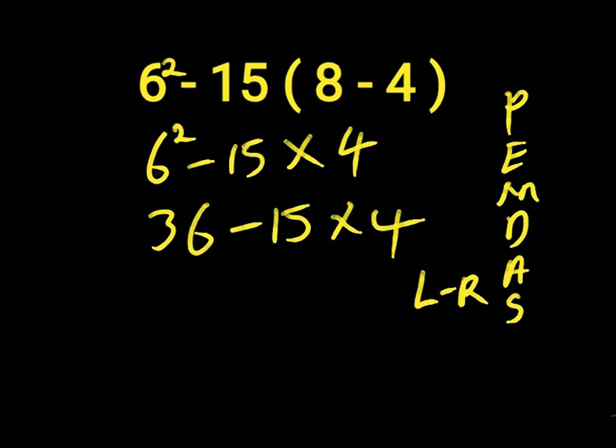Then we have 36 minus 15 times 4. We have a subtraction and a multiplication, so we work with the multiplication first because it comes before subtraction. 15 times 4 will give us 60. Then we have 36 minus 60.